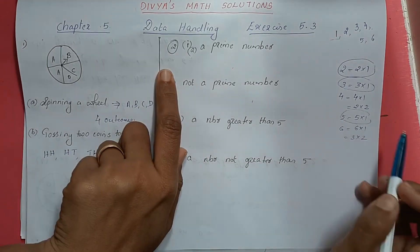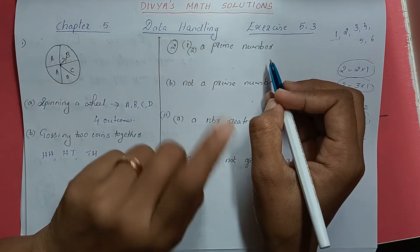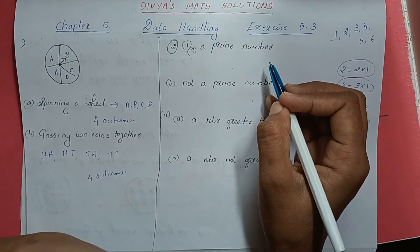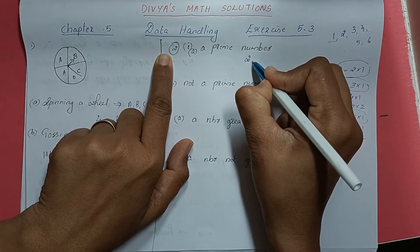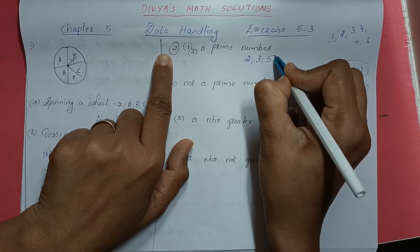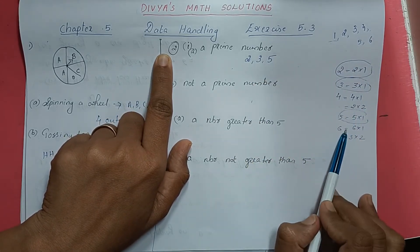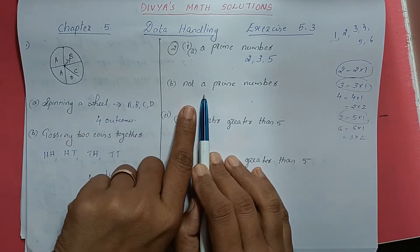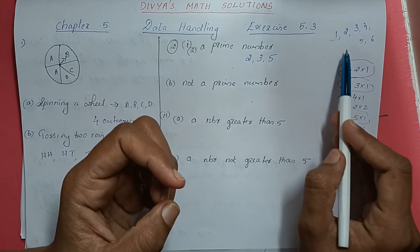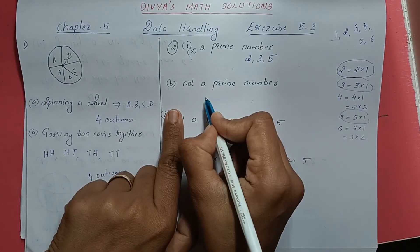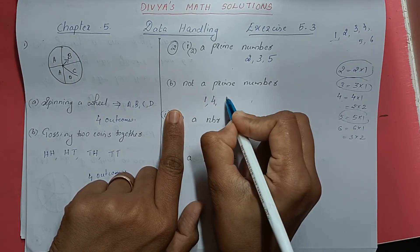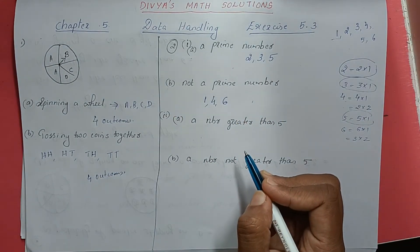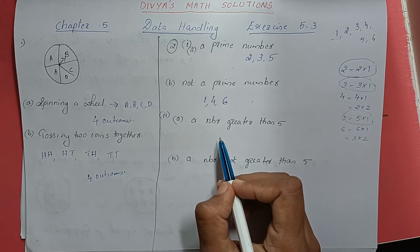So the outcomes of getting a prime number are 2, 3, or 5 — these three are the prime numbers. For not a prime number: 1 is not a prime number, 4 is not a prime number, and 6 is not a prime number. So 1, 4, and 6 are the outcomes of not getting a prime number.